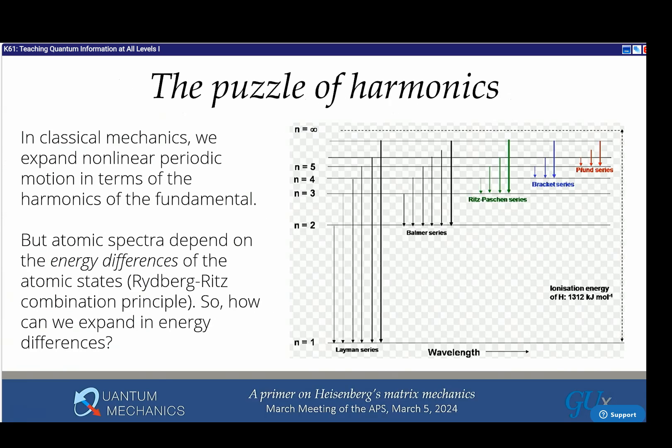In classical mechanics when you have periodic motion, you get a response at the fundamental frequency and the harmonics. The expectation in spectroscopy was to see harmonics of fundamental frequencies. But they didn't. They saw energy differences. This is called the Rydberg-Ritz combination principle. How can I expand the theory in energy differences? Heisenberg's idea was to use matrices.